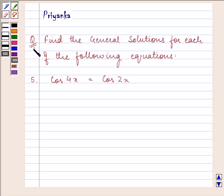Hi and welcome to the session. Let us proceed with the question. It says find the general solution for each of the following equations. The equation given to us is cos 4x equals cos 2x.